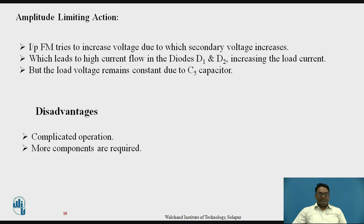The disadvantage of this ratio detector is that the circuit is complicated. Hence, it requires more components and the circuit becomes bulky. It also becomes difficult to trace out in which part an error has occurred or where the circuit has shorted.